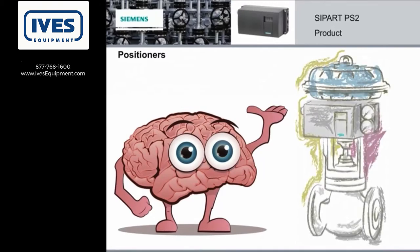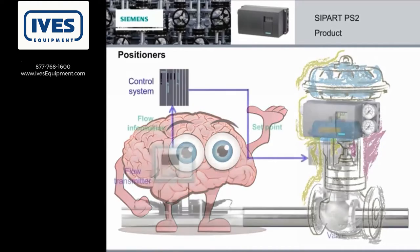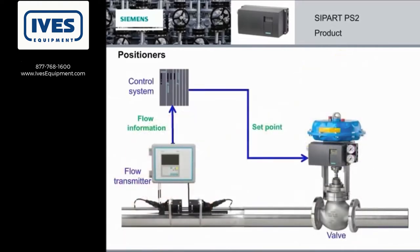The positioner is the brains of the system, and it controls the actuator. Here's how it works: the positioner receives the set point, detects the valve position, and then changes the compressed air supply of the actuator in order to drive the valve to the requested set point.